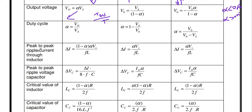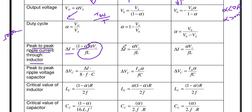The peak-to-peak ripple current through the inductor is ΔI. For the buck converter: ΔI = (1 − α) × α × Vs / (F × L), where L is inductance, F is frequency, α is duty cycle, and Vs is input voltage. For the boost converter: ΔI = α × Vs / (F × L). This same formula also applies to the buck-boost converter.